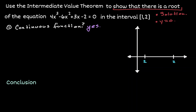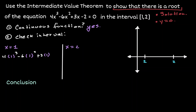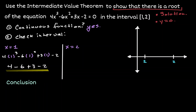Next, we would like to check the endpoints of this interval — when x is equivalent to 1 and when x is equivalent to 2. Let's start by evaluating x equals 1 into the polynomial. In our evaluations we get 4, then negative 6, then 3, and we bring down the negative 2. Combining all these values, we get negative 1.